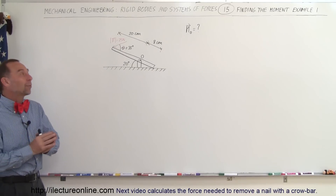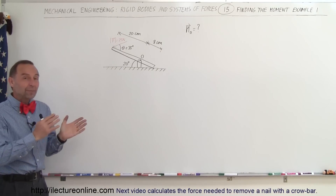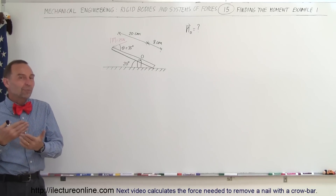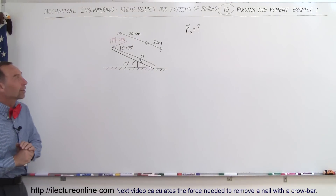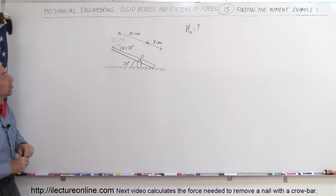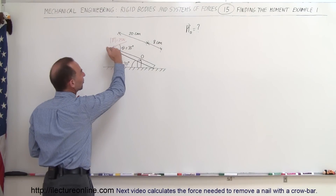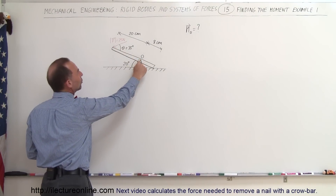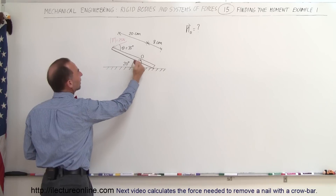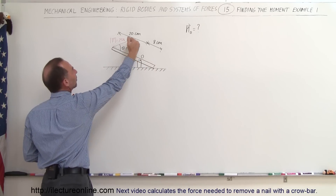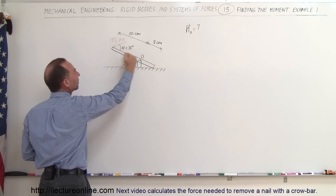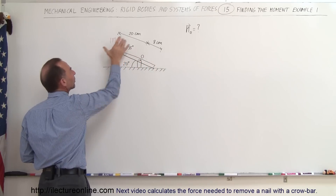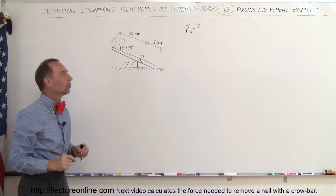Welcome to ElectronLine. Now we're going to do an example, now that we understand the concept of a moment and the concept of a vector product. We want to find the moment of this situation. We have something that can pivot about point O, inclined at an angle of 20 degrees. A force is applied at an angle of 35 degrees relative to the incline, with a magnitude of 25 newtons.